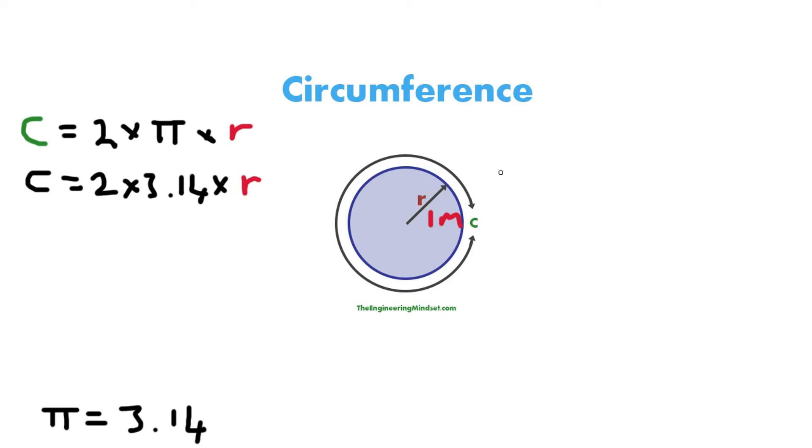Obviously if you know the diameter, that distance there, then you just divide it by 2. So let's say the diameter is 2 meters and we divide it by 2 to get radius. Diameter equals 2 times radius, or radius equals diameter divided by 2.